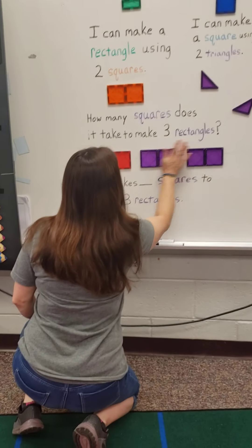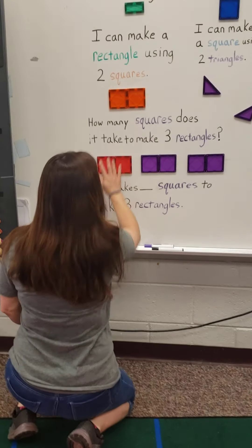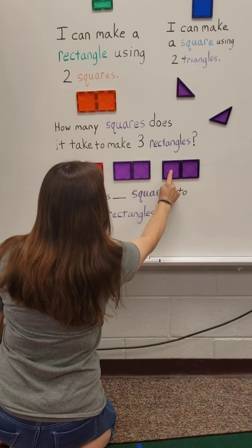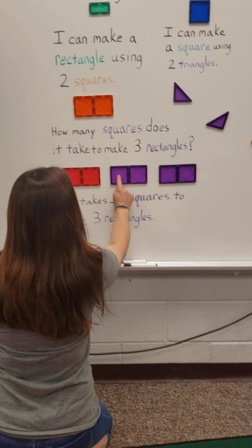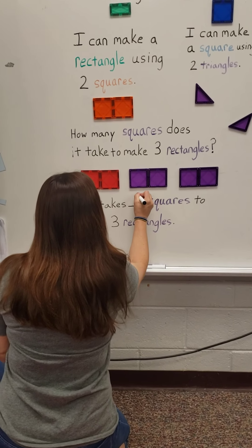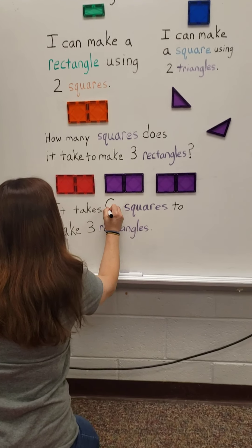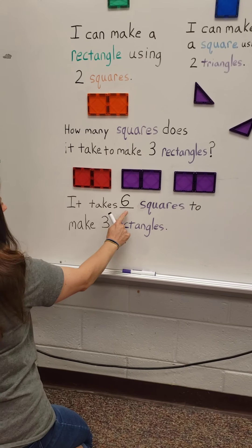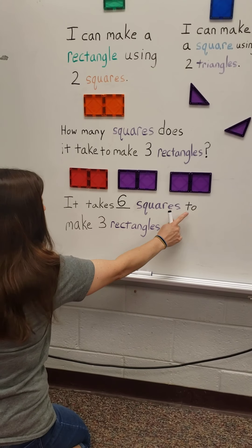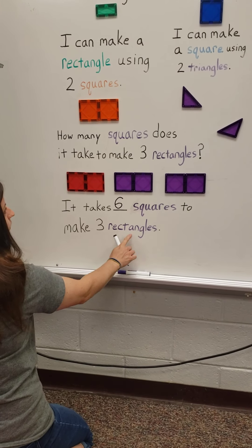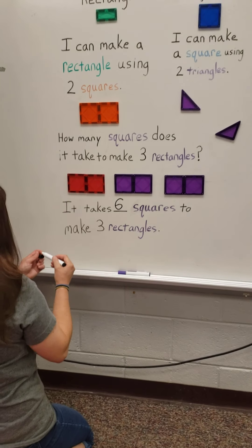Let's see how you count: one, two, three rectangles. One, two, three, four, five, six squares. So it takes six squares to make three rectangles.